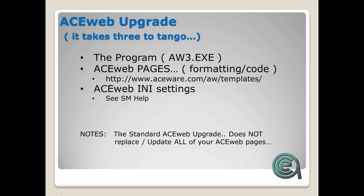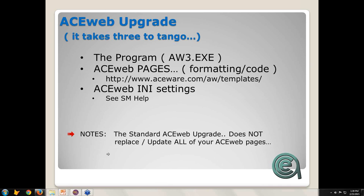The current version of ACEweb is 3.5, and we'll talk about how you can tell what the most current one is. As part of the standard ACEweb upgrade, we do not replace or update all of your ACEweb pages. That is something we'll need to review and we'll show you how you can tell, and of course you're generally doing this in concert with your ACEweb tech.